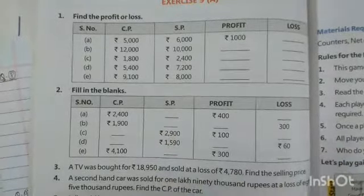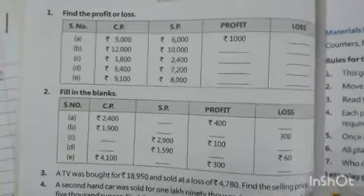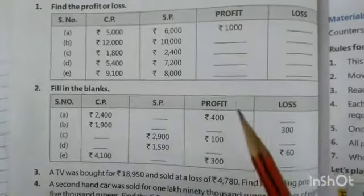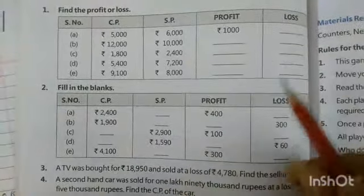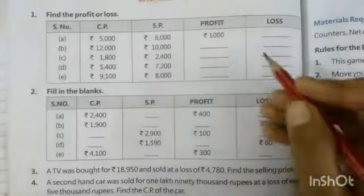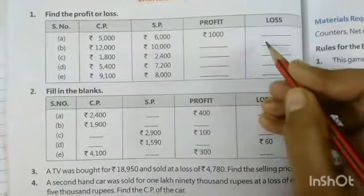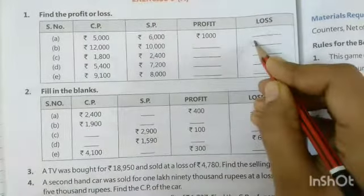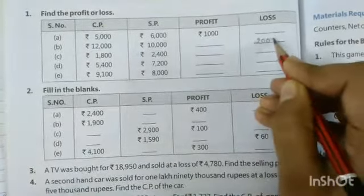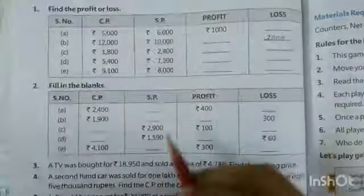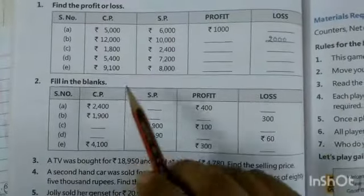12,000 cost price is greater than sell price 10,000. So there is a loss of 2,000. 12,000 minus 10,000 equals 2,000.